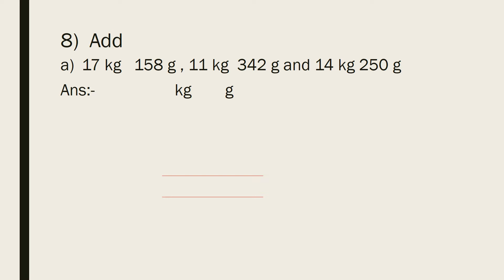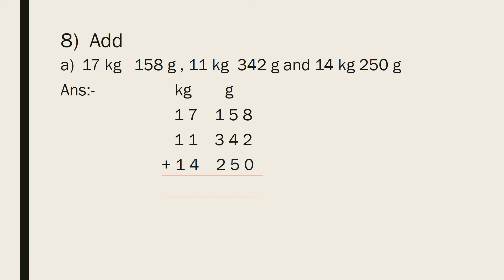Now, in the first weight, 17 kilograms 158 grams — kilograms are 17 and grams are 158. In the second weight, 11 kilograms 342 grams — kilograms are 11 and grams are 342. And in the third weight, 14 kilograms 250 grams — kilograms are 14 and grams are 250. Now, add these three weights.